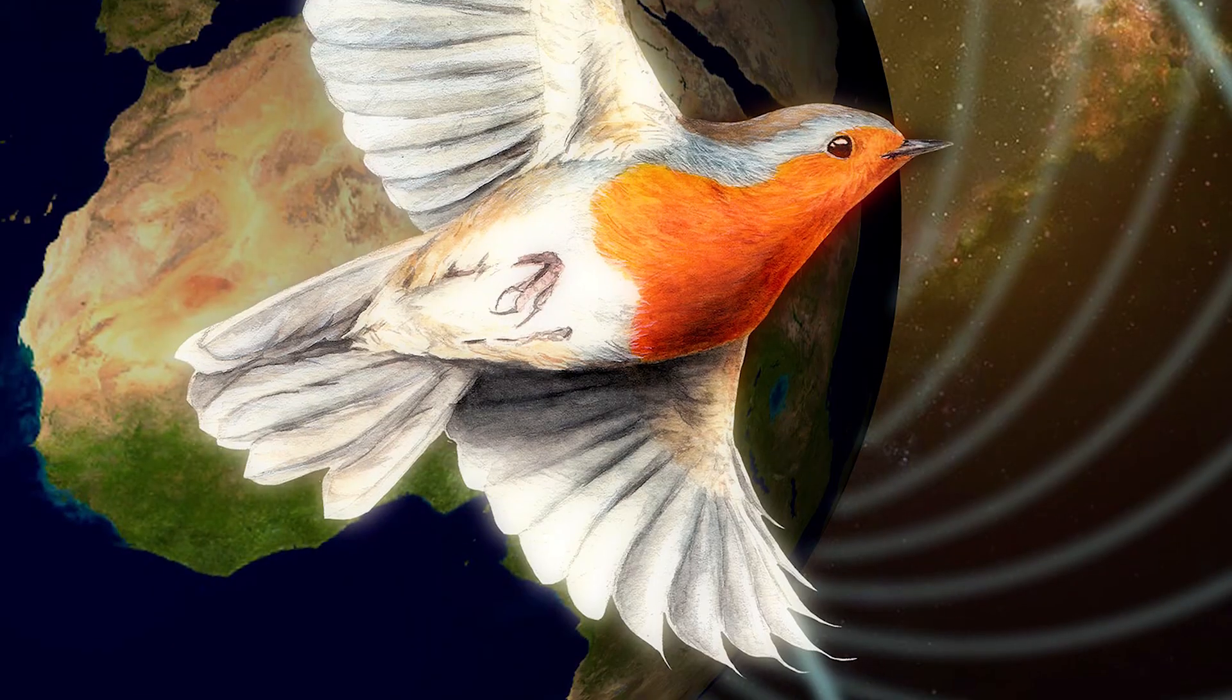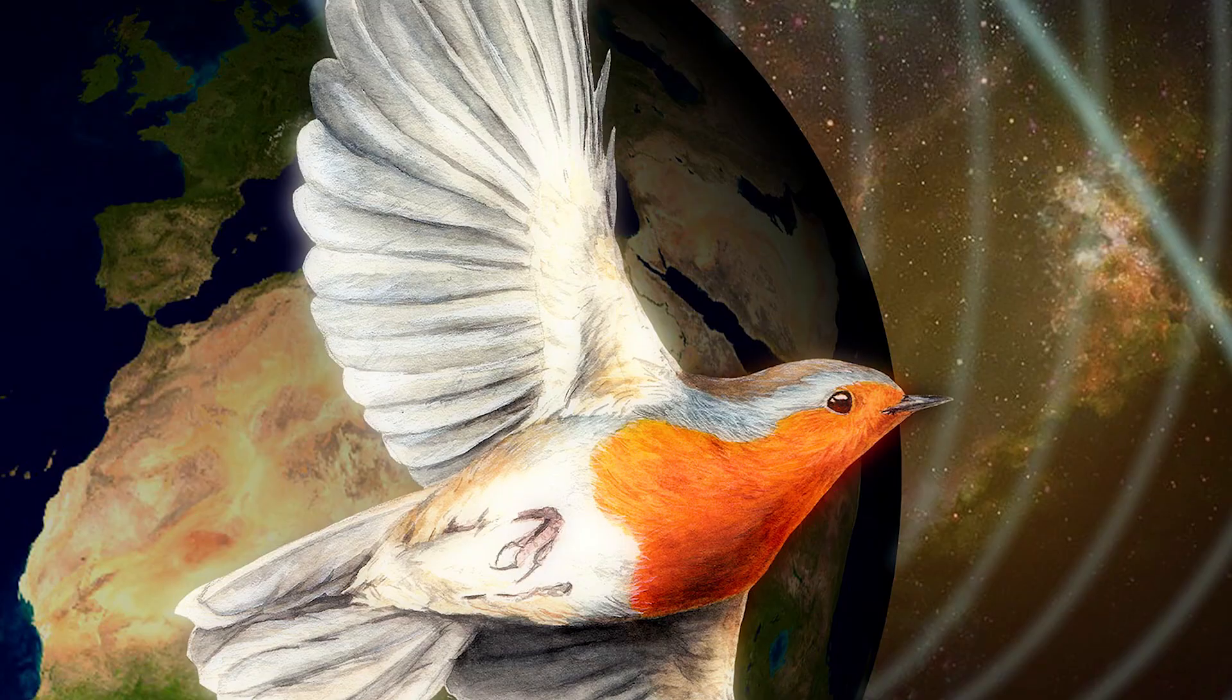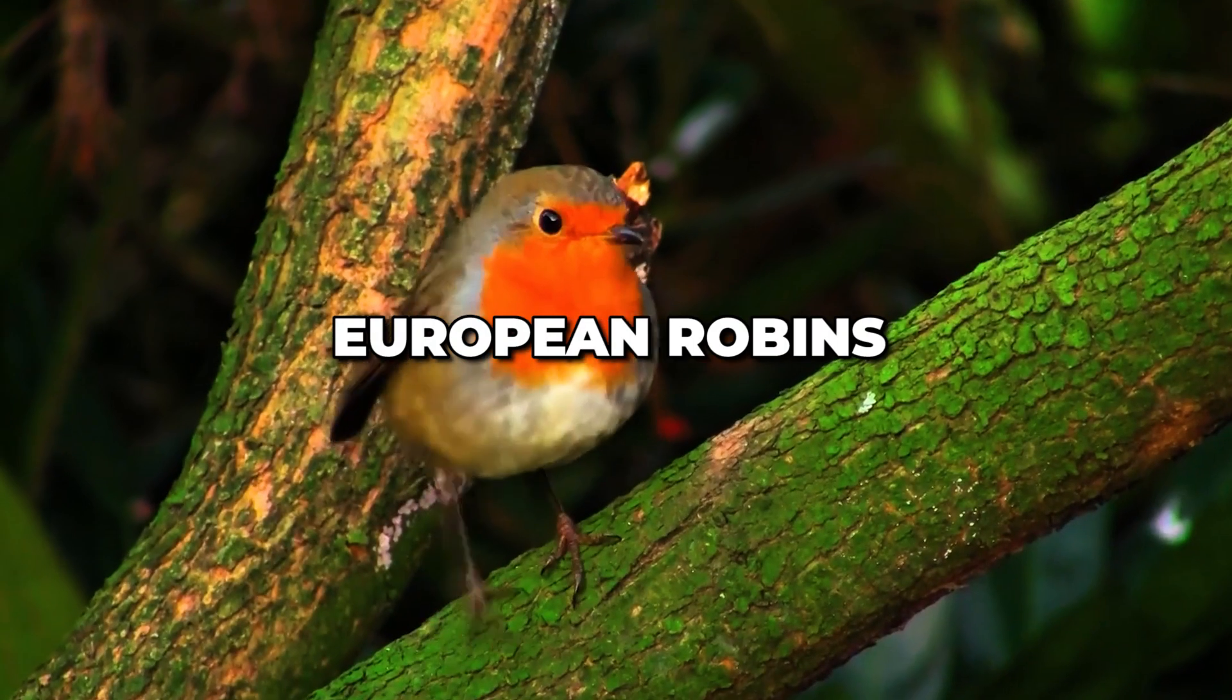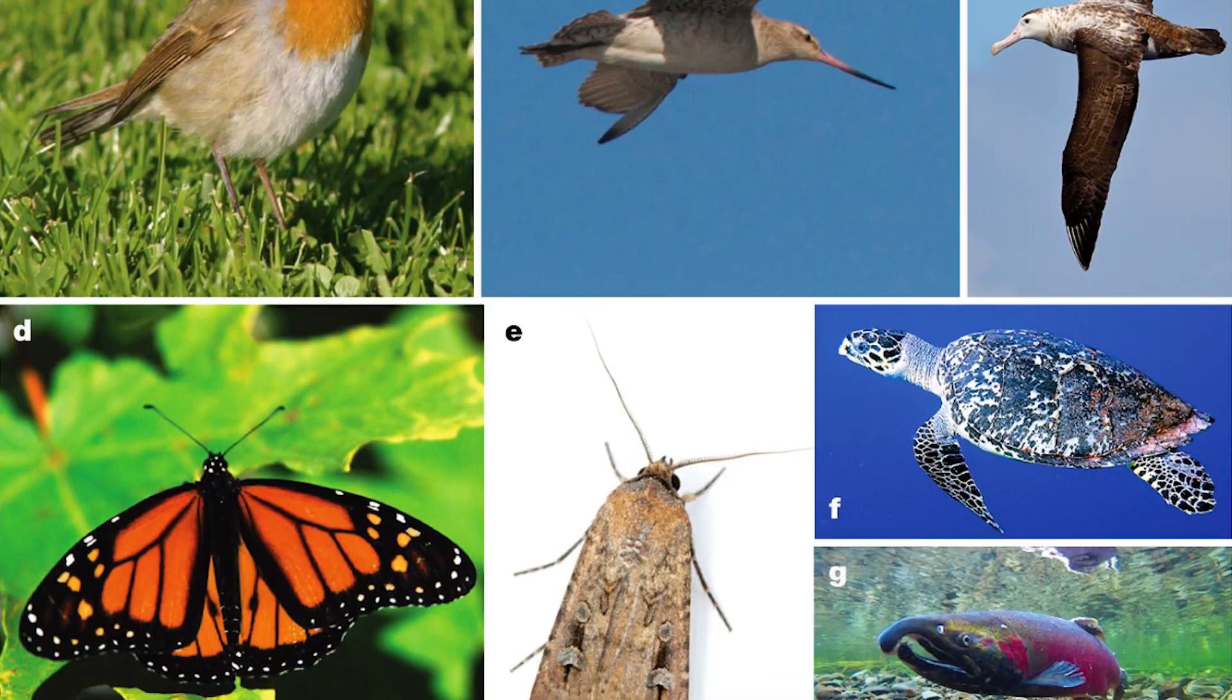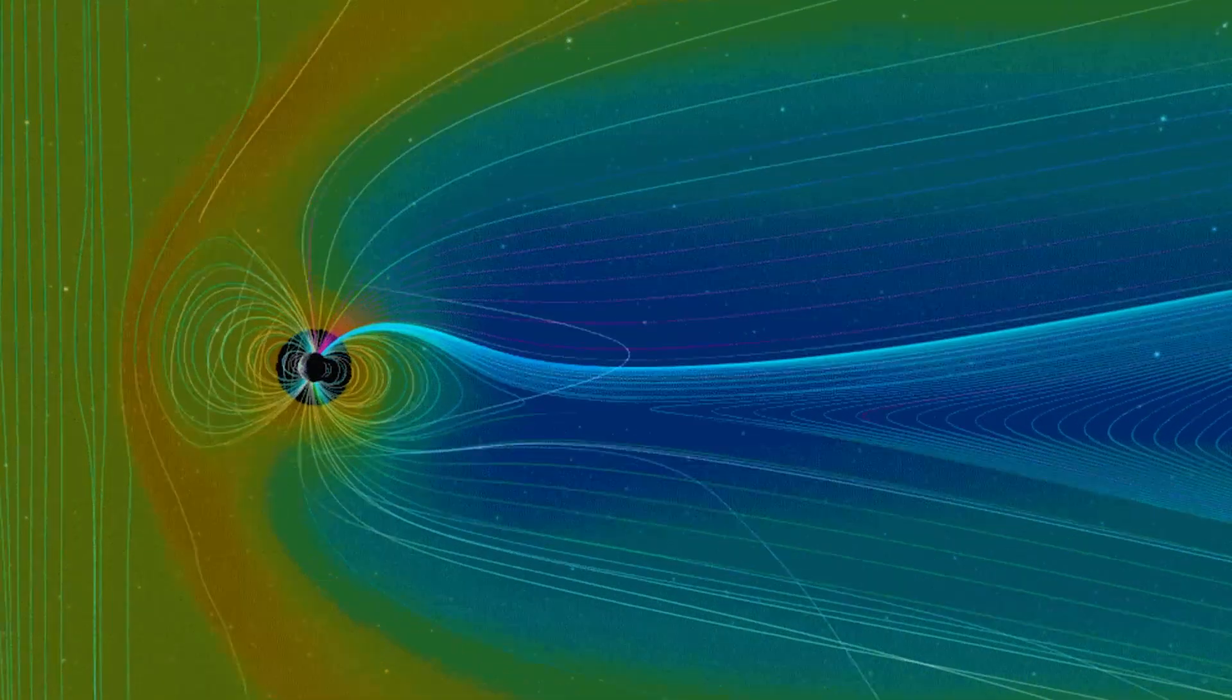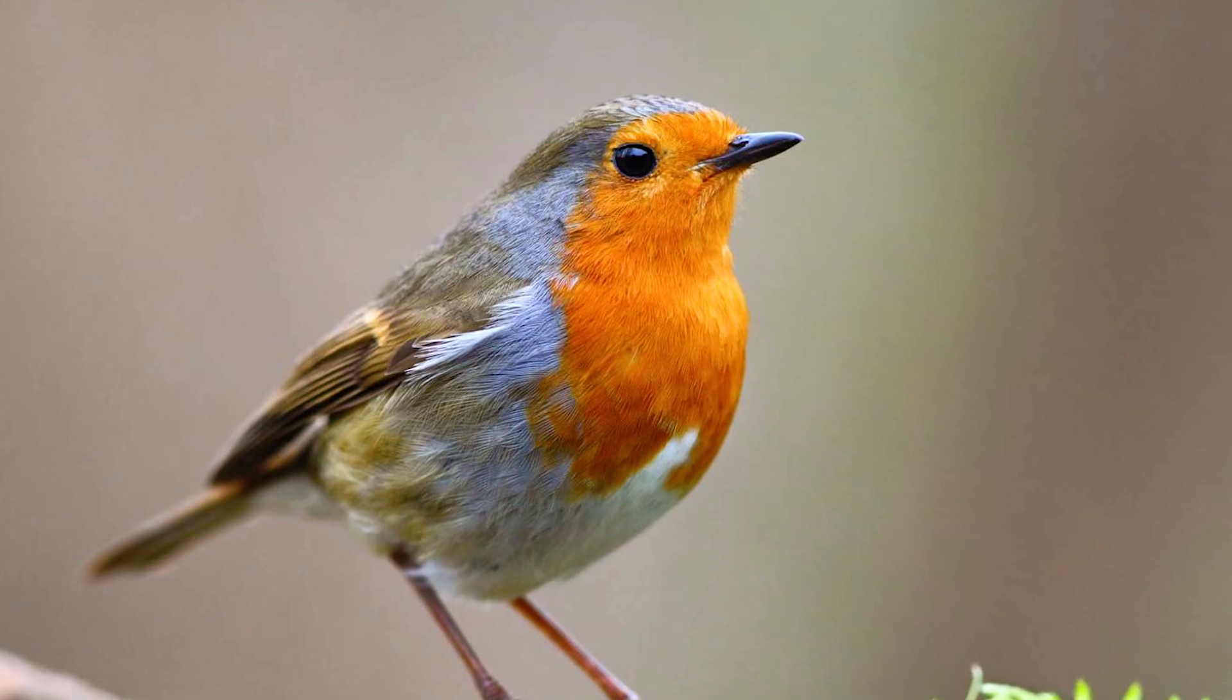Another fascinating example of quantum biology is found in the remarkable navigational abilities of certain birds. European robins and other migratory species can sense Earth's magnetic field for navigation, an ability known as magnetoreception. But how do they detect something as subtle as Earth's magnetic field?